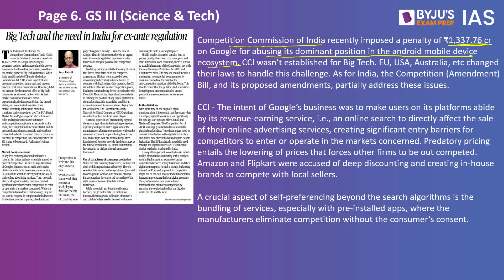While India does not have robust laws to deal with this yet, nations like USA, Australia, and the European Union have already made legal changes to tackle these issues. This penalty on Google in India is not the first such case — these nations have already put huge penalties on Google and Amazon for misusing their position. The CCI said the intent of Google's business was to make users on its platforms abide by its own revenue-earning service, which is online search, and Google does not want any competition there.